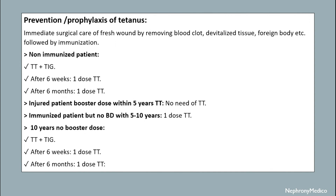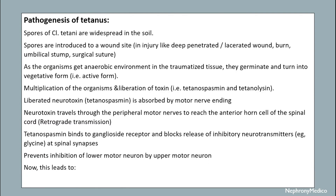Prevention of tetanus: immediate surgical care of the wound should be done by removing blood clots, devitalized tissue, foreign bodies, etc., followed by immunization. For non-immunized patients the full dose should be given. For immunized patients with a booster dose within five years, no tetanus toxoid is needed. If immunized but no booster within five to ten years, one dose of tetanus toxoid is given. If ten years with no booster dose, the full following dose is given.